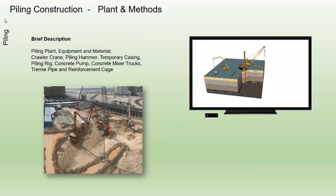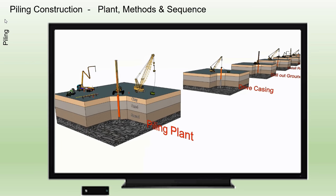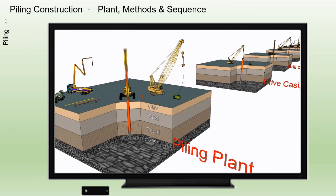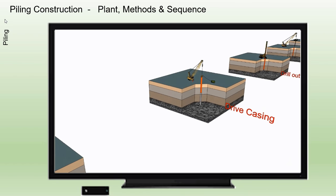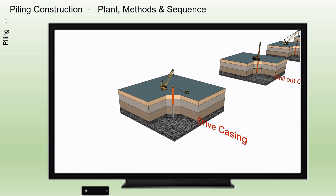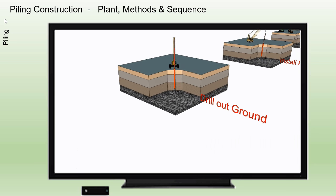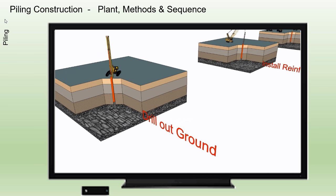Piling — Bored in-situ piles. Piling plant, equipment and materials include: crawler crane, piling hammer, temporary casing, piling rig, concrete pump, concrete mixer trucks, tremie pipe, and reinforcement cage.